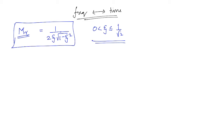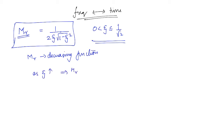If you differentiate Mr with respect to zeta, we can find out whether it is an increasing or decreasing function. The final result is that Mr is a decreasing function. This means that as zeta increases, Mr will decrease, and if zeta is decreasing, the resonant peak will increase.